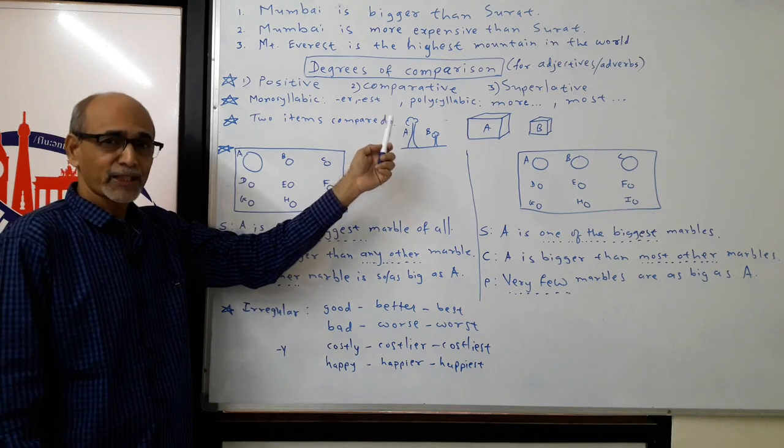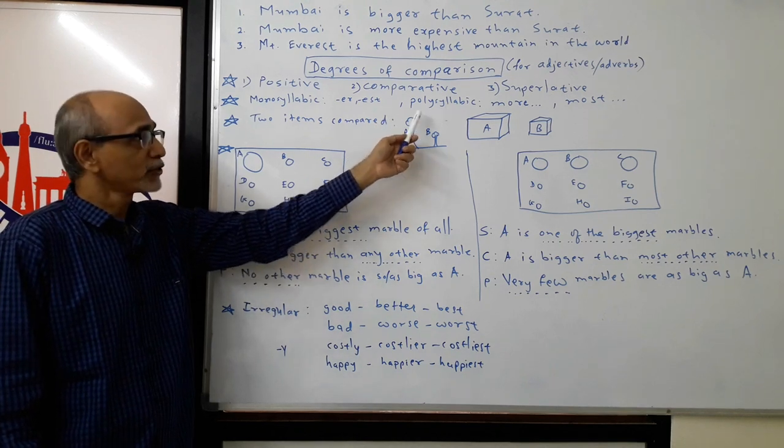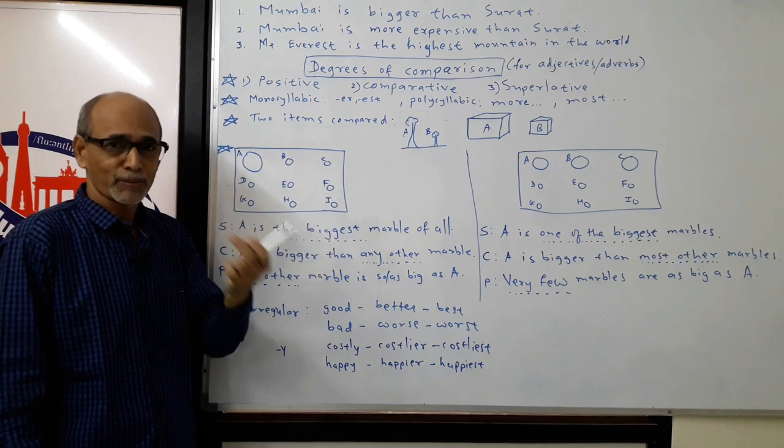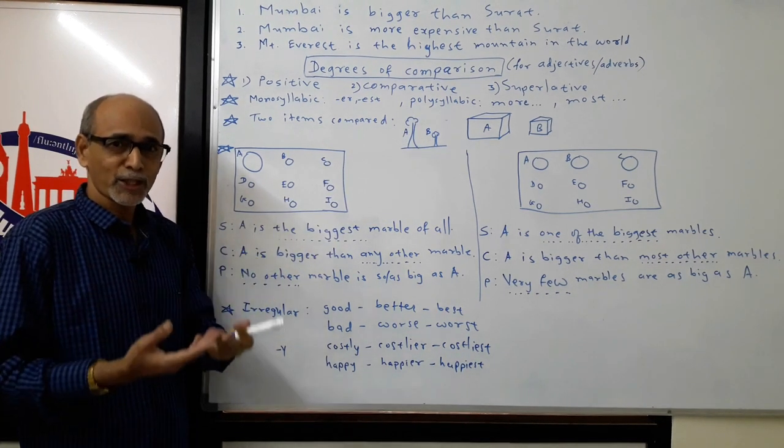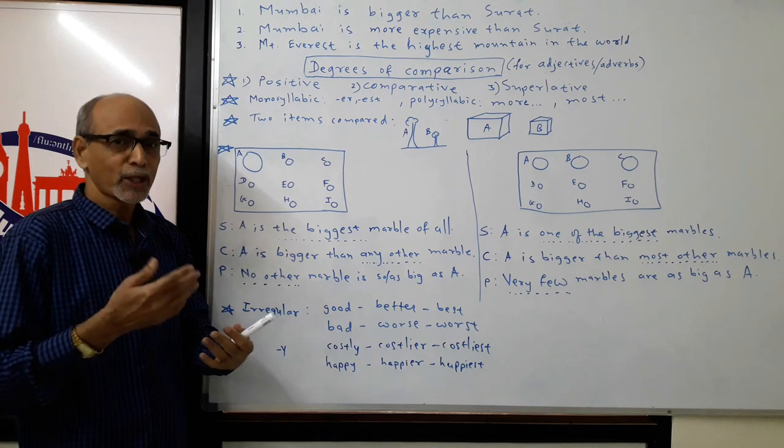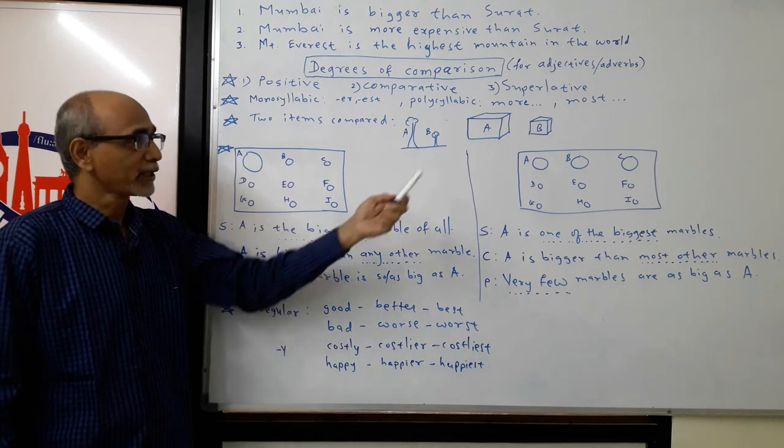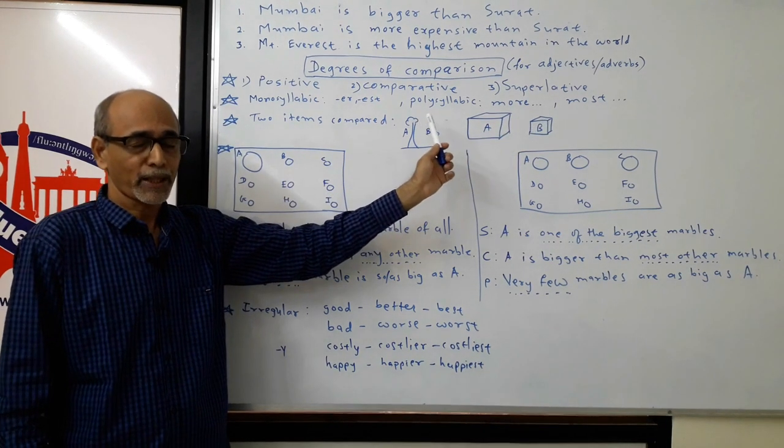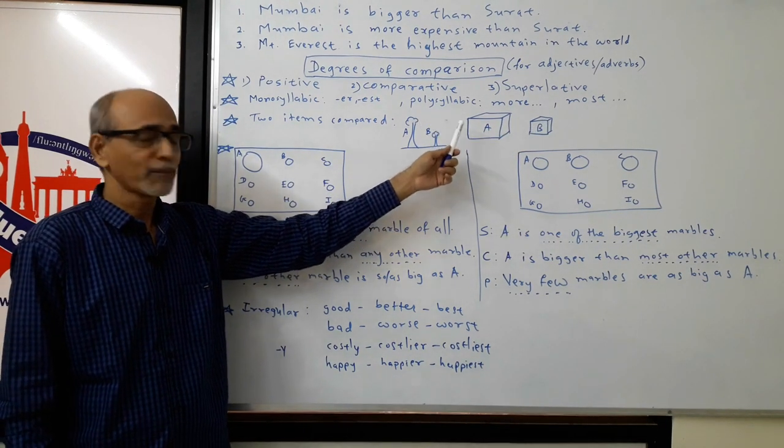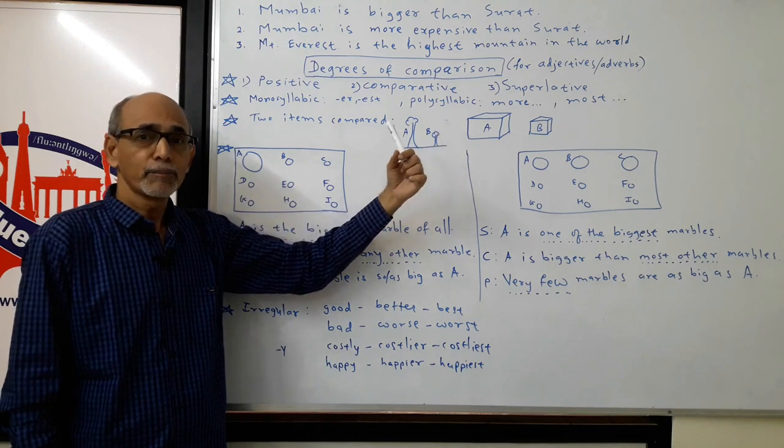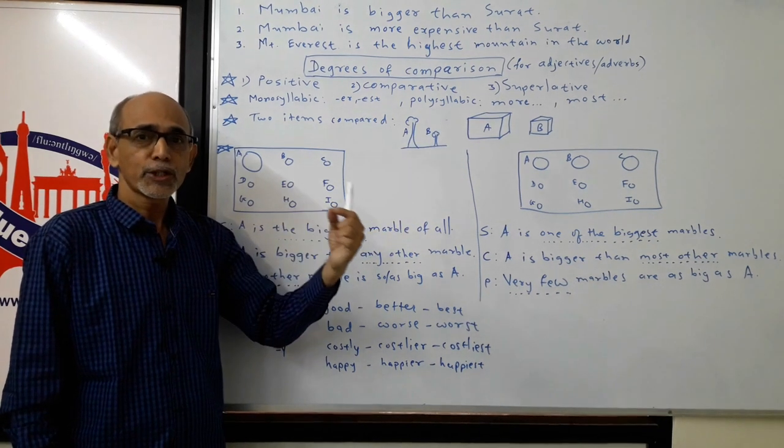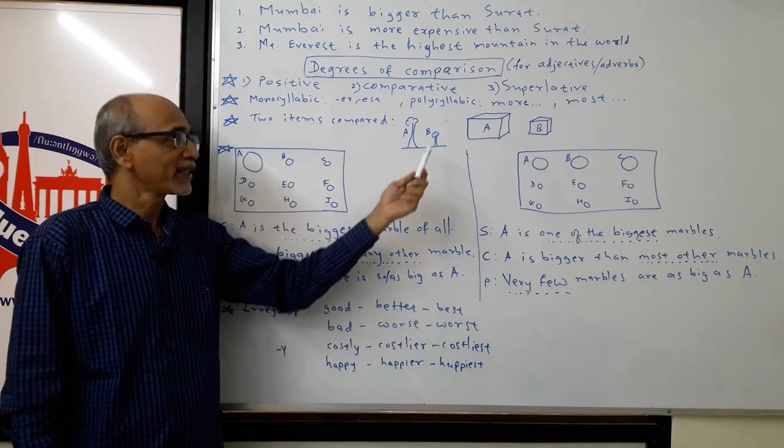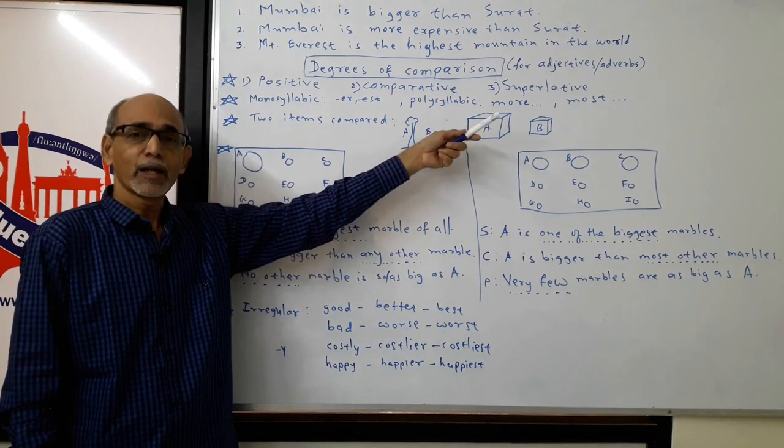If your adjective or adverb is polysyllabic, that means it has more than one syllable. When you pronounce that word, if you have more than one breath required, then it will require more and most for comparative and superlative. For example, when you have a word like beautiful, there are three syllables, so in that case you will require more beautiful and most beautiful.